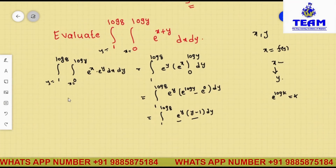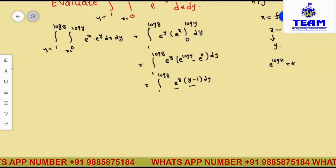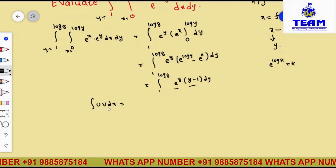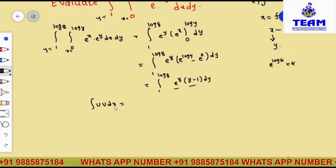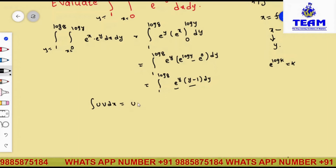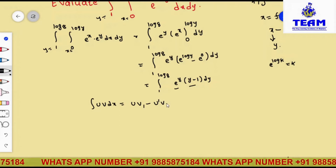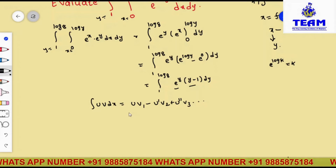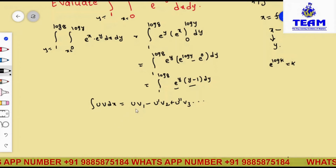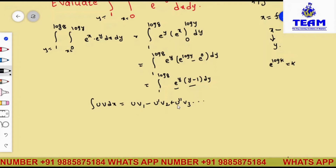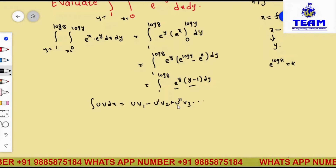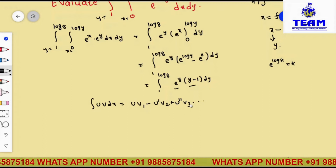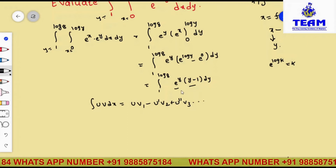The UV rule formula is: integral of u·v dy = u·v1 minus u'·v2 plus u''·v3, and so on. Here v1, v2, v3 are the successive integrations of v, and u', u'' are the successive derivatives of u. To choose u: whenever you have an algebraic and a non-algebraic function, take the algebraic function as u. If you take e to the power of y as u, its derivative is again e to the power of y and never decreases.